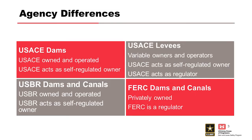There are differences between federal agencies. Four federal agencies operate under the umbrella of FEMA and risk analysis: the Corps, Reclamation, FERC, and TVA. Each serves different functions and manages structures differently. The Corps owns and operates all its dams as a self-regulated owner, but for levees has variable owners and operators and acts as regulator without owning them. FERC, by contrast, has all privately owned dams and acts as the regulator.